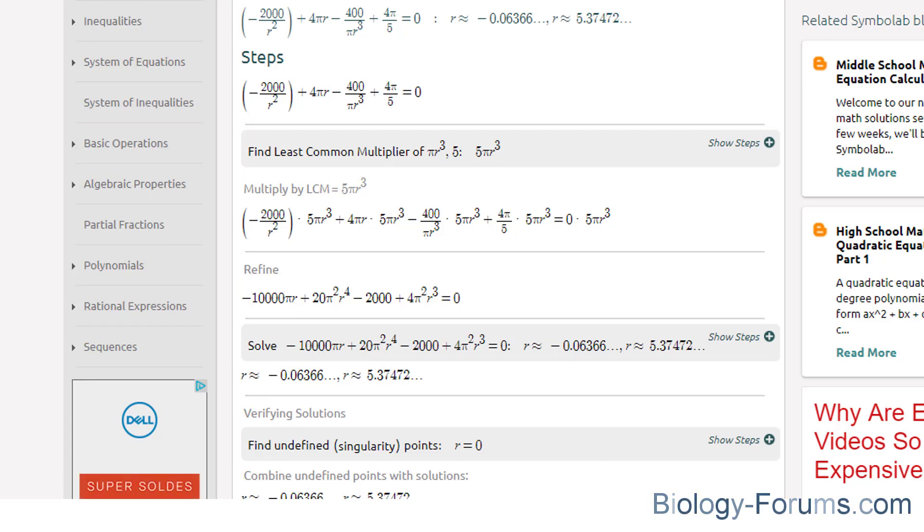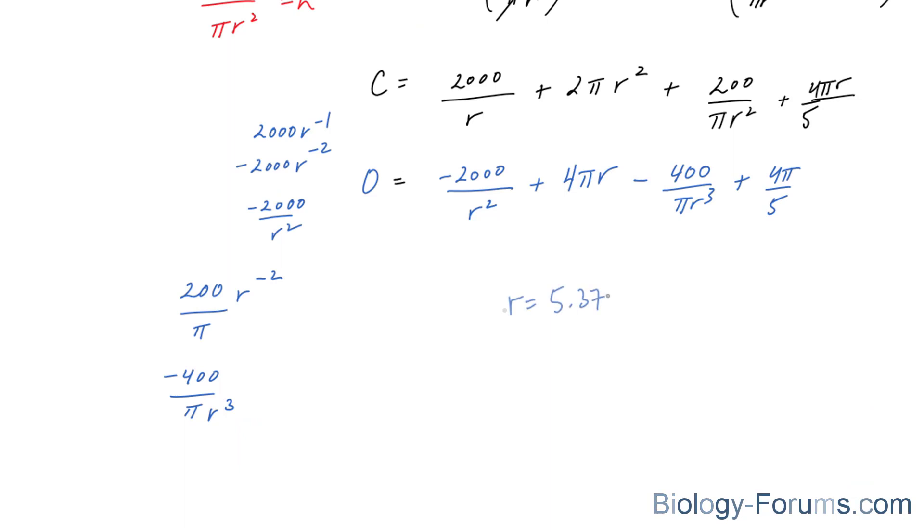You get one that is negative, and you get one that is positive. Often times, you have to choose the one that makes the most sense in your question. You can't have a negative radius, but you can have a positive one, so we're going to use 5.37 as a radius.